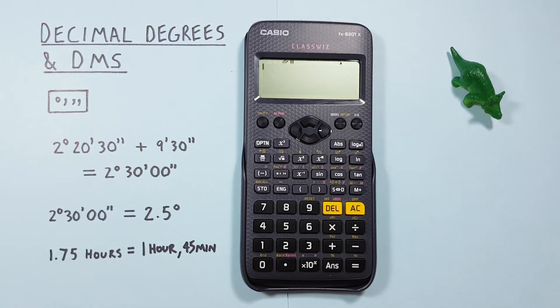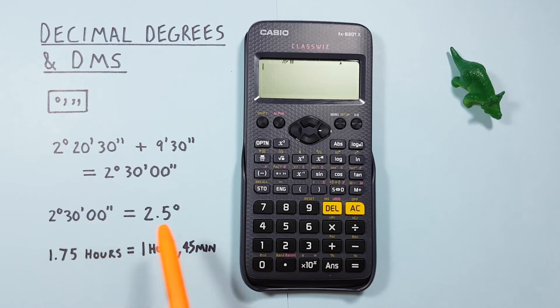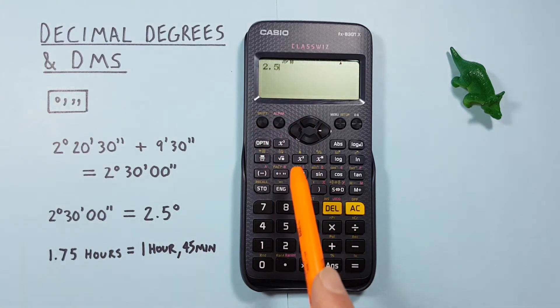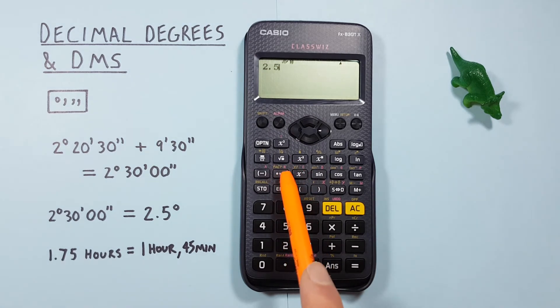If we want to do that in reverse, let's say we were given 2.5 decimal degrees and we want to convert that to degrees minutes seconds. All we do is enter that 2.5 on our screen, hit the degrees key. There we go. And press equals.